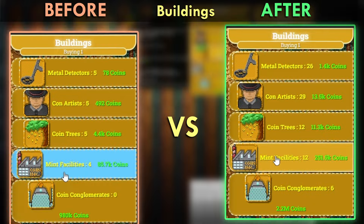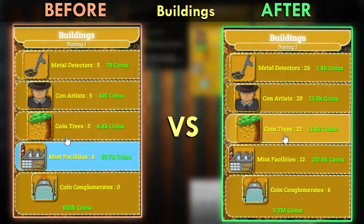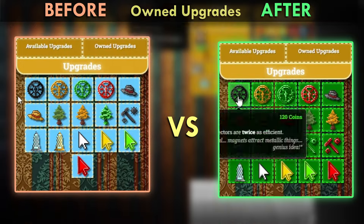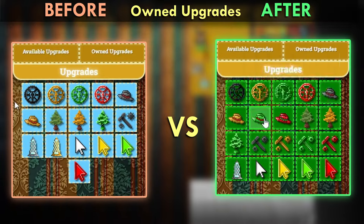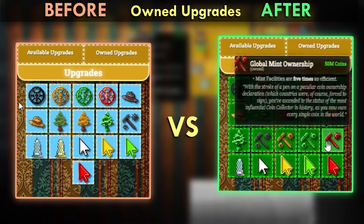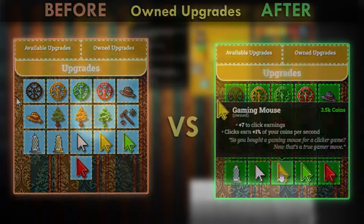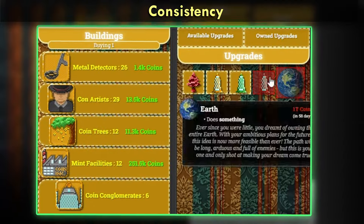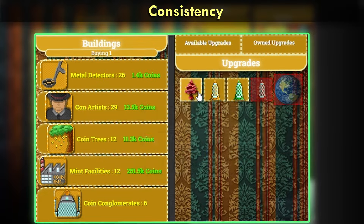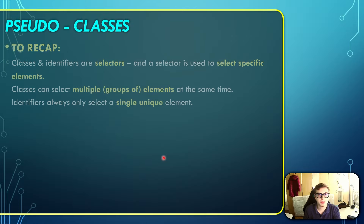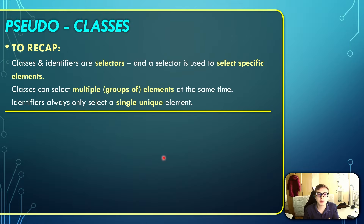We are going to use pseudo-classes to make our game a lot more interactive, fix a lot of graphical details and oversights that were present previously, visually separate owned, affordable and unaffordable upgrades and overall improve on the consistency of our stylesheet. So before we begin let's first recap what we have learned because it's going to be important.